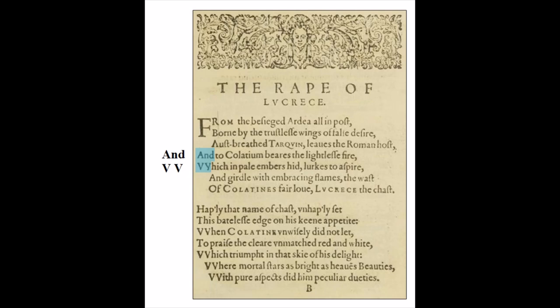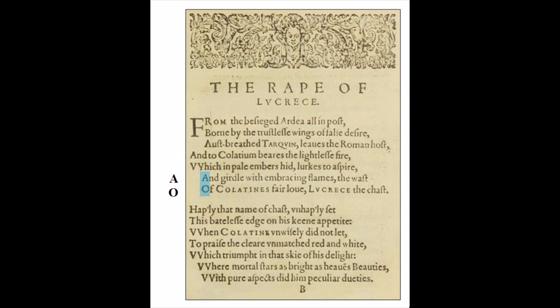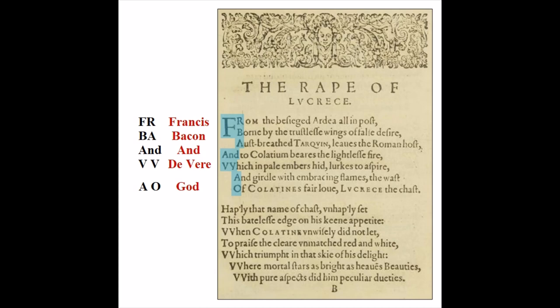Keep reading along the left margin, and we get the words AND V-V. I've explained many times how Edward Vere sometimes used double V to sign his name. The stanza ends with the last two letters A-O. A-O stands for Alpha Omega, which is another name for God. All together, this acrostic spells F-R-B-A and V-V-A-O. The thing is, we don't read this from top to bottom — it's meant to be read in reverse. When we do, it reads: God, De Vere, and Francis Bacon.